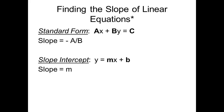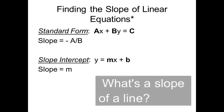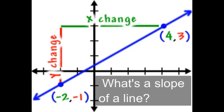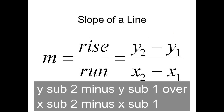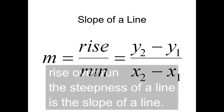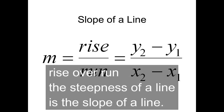What's the slope of a line? Y sub 2 minus Y sub 1 over X sub 2 minus X sub 1. Rise over run — the steepness of a line is the slope of a line.